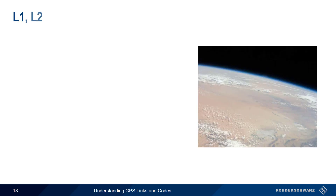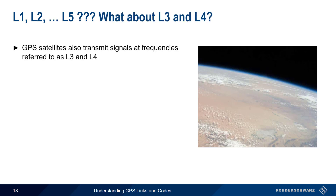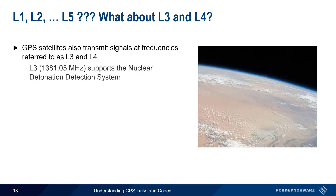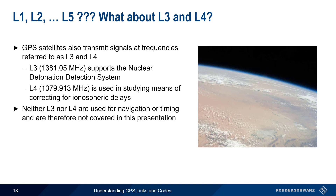So we have L1, L2, and L5. What about L3 and L4? Actually, GPS satellites do transmit signals at frequencies referred to as L3 and L4. The L3 link supports the Nuclear Detonation Detection System, or NUDET, and L4 is used for research into methods of correcting for ionospheric delays. Because neither L3 nor L4 are used for navigation or timing, we won't be covering them in this presentation.